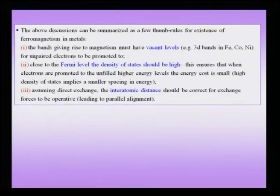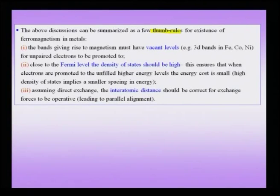The up-spin and down-spin electron density of states are shifted with respect to each other, and the way they fill gives the non-integral magnetic moments in iron. Going from atomic magnetic moments to the magnetic moment of entire solids is an arduous task, so we use certain shortcut techniques. Thumb rules for ferromagnetism based on the band picture include: vacant levels, high density of states close to the Fermi level, and appropriate inter-atomic distance — responsible for magnetism in 3d metals like iron, cobalt, and nickel.